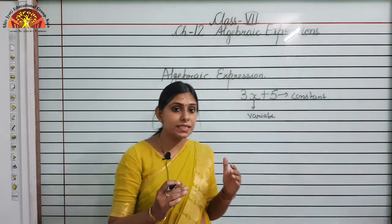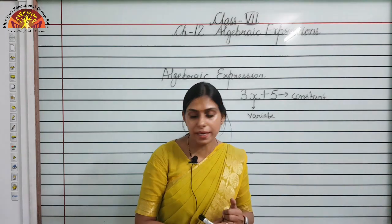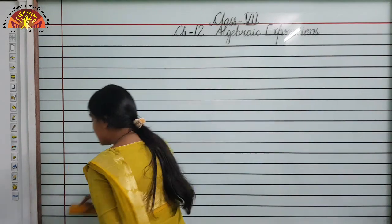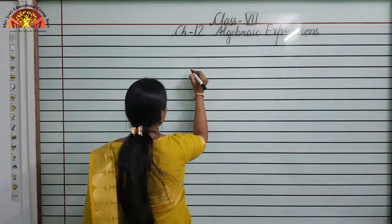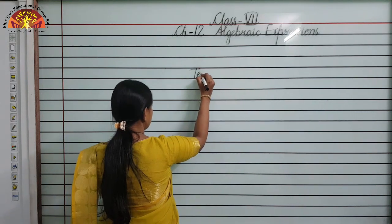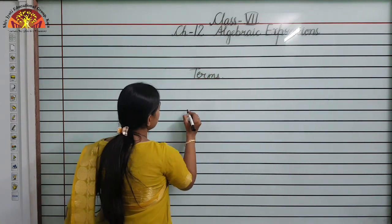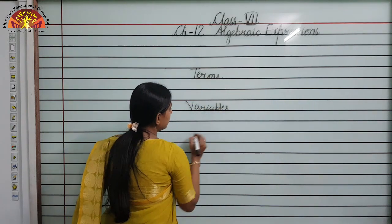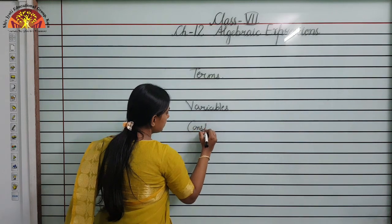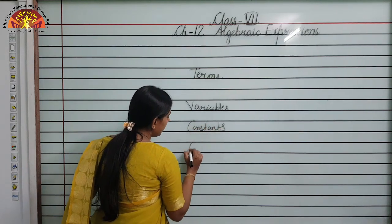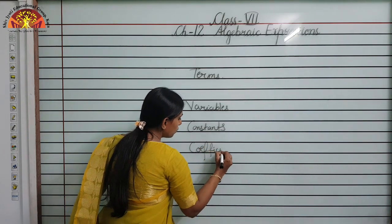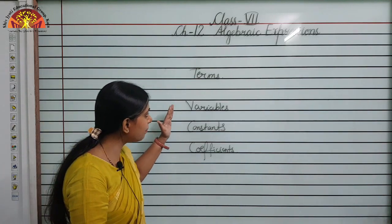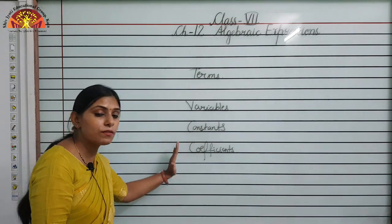Now we will understand the different terms used in an algebraic expression: what are terms, what are variables, what are constants, and what are coefficients? We will look at each one by one — what is a term, what is a variable, what is a constant, and what are coefficients.